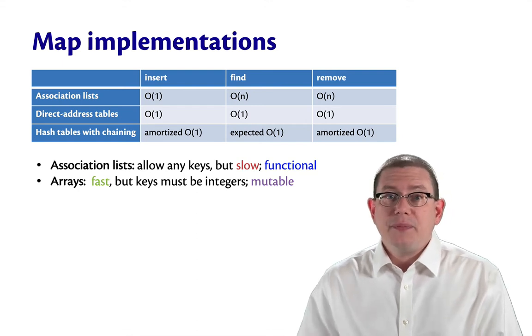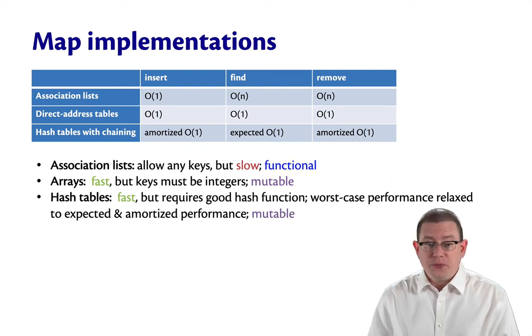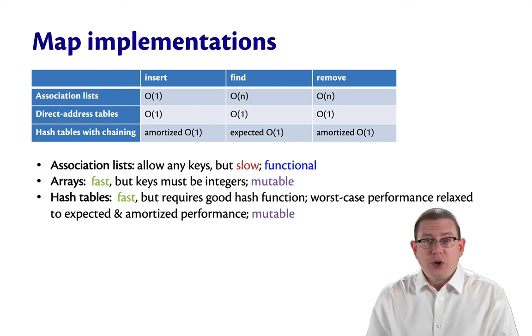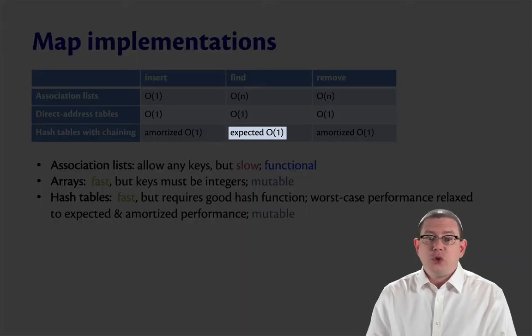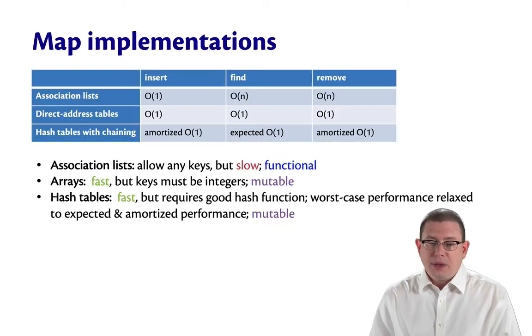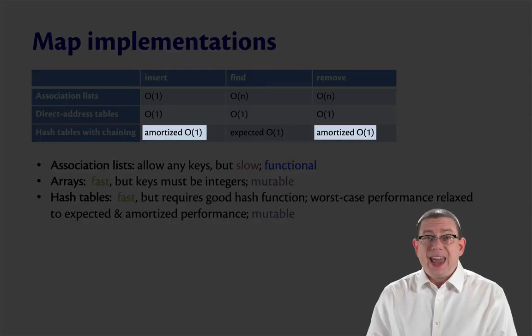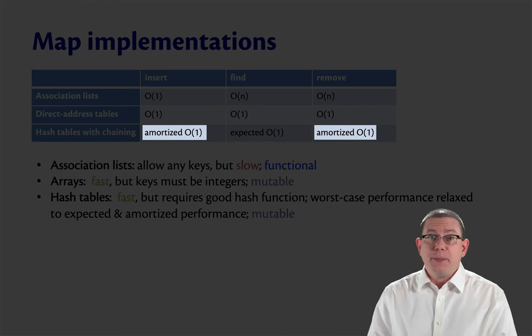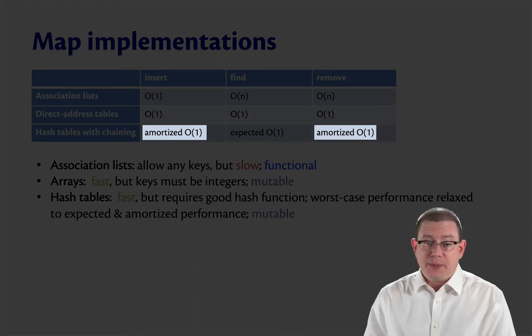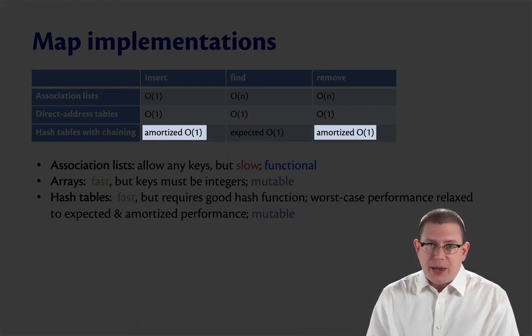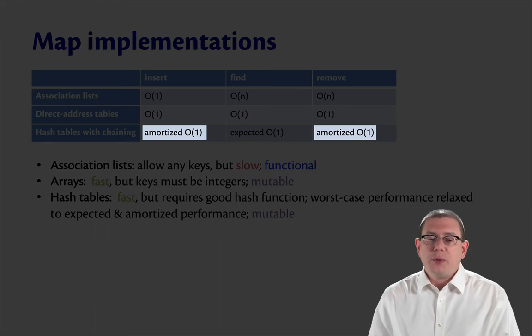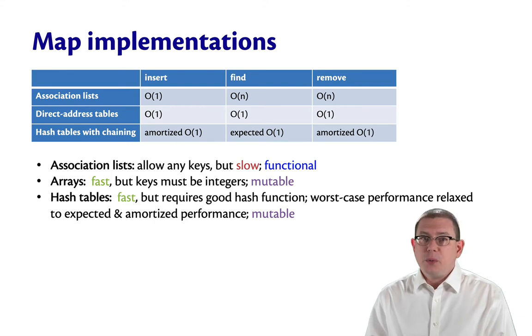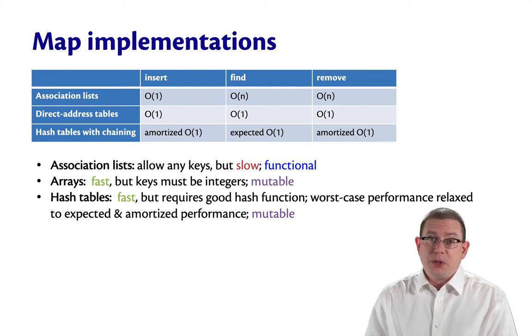That's neither here nor there. Hash tables are also fast. They require a good hash function. That gets you the expected constant time performance for find. For insert and remove, they had worst case linear time performance, which at first looked pretty bad. But after we studied amortized analysis, we realized that we could say that they had amortized constant time performance. Sometimes they're really slow, but most of the time they're really fast, and on average it works out they're fast.